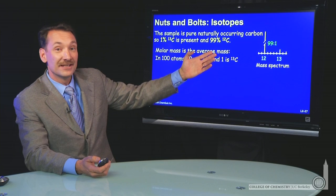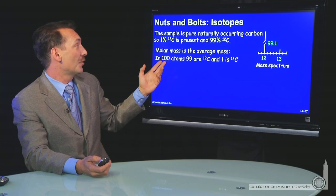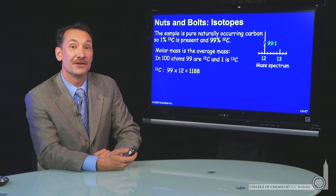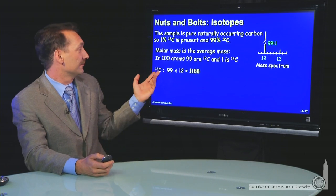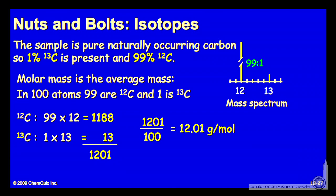The molar mass is the weighted average of those two isotopes. In every 100 atoms, there are 99 carbon-12s and 1 carbon-13. In 100 atoms, you'd have 99 carbon-12s for a mass of 1188, and one carbon-13 for a mass of 13. Add those two and divide by the total number of atoms, 100, and you get a molar mass of 12.01 grams per mole.